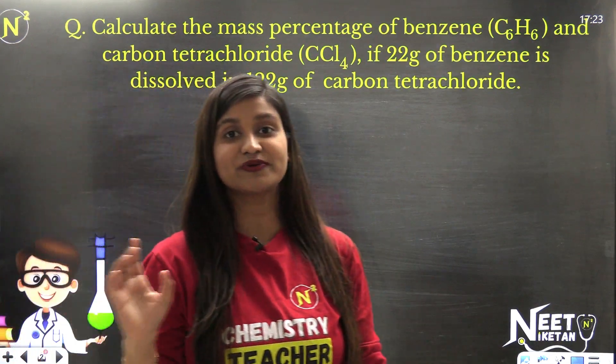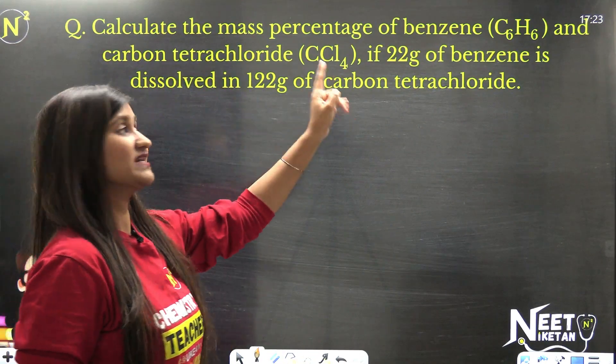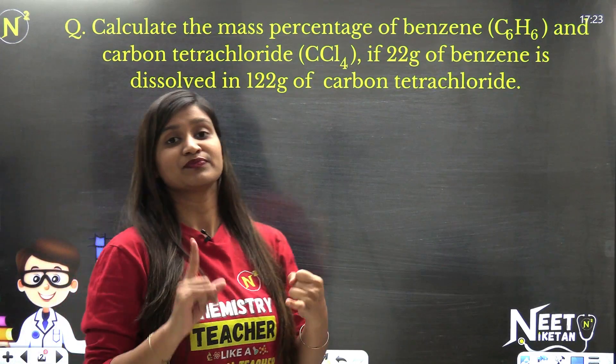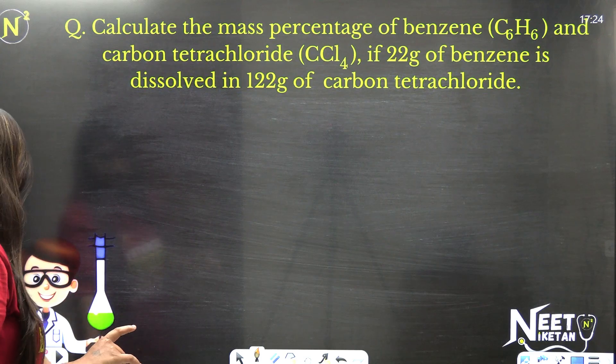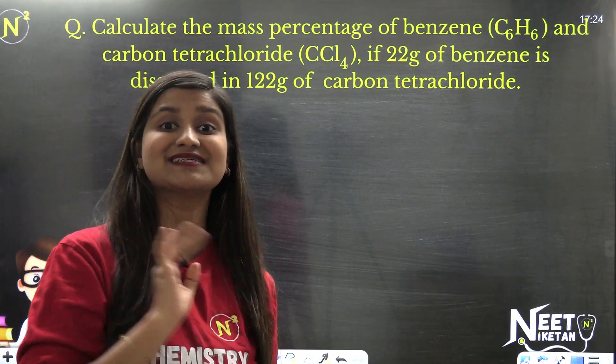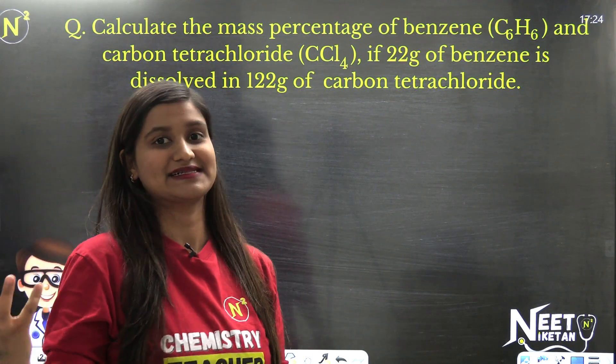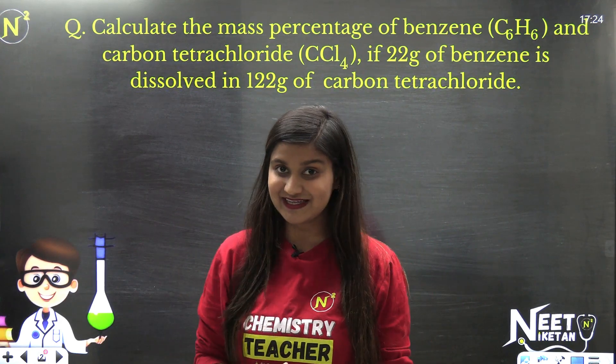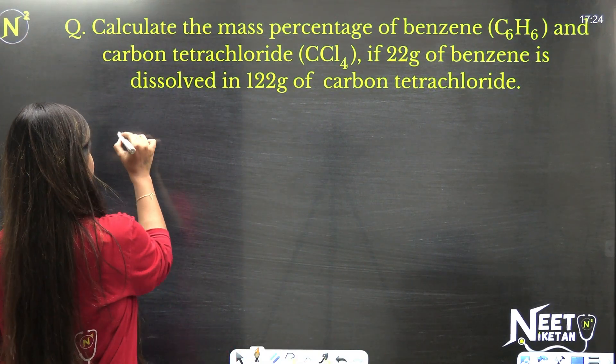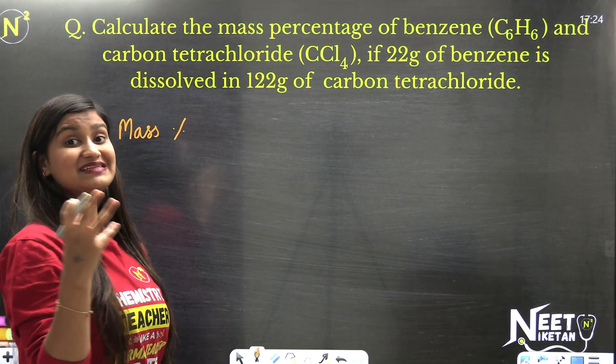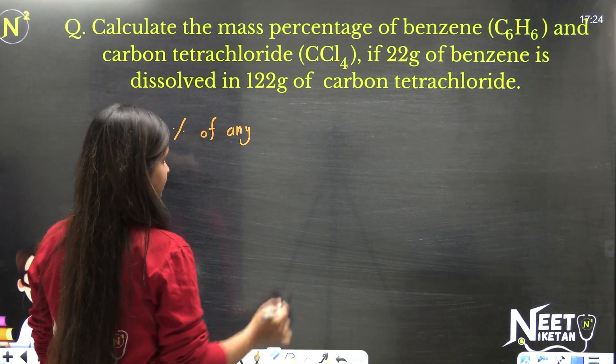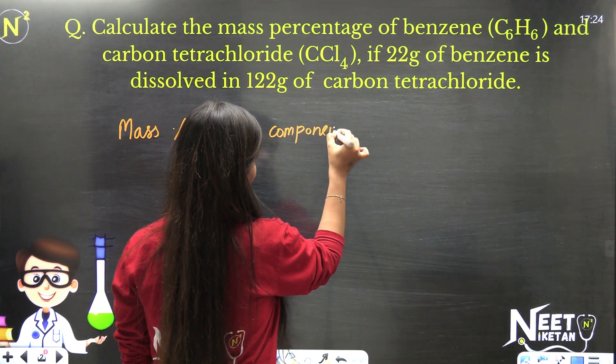Let's get started. Here we have question number one, which says calculate the mass percentage of benzene C6H6 and carbon tetrachloride CCl4 if 22 grams of benzene is dissolved in 122 grams of carbon tetrachloride. Mass percentage, we saw it in the last session, that we can remove the mass percentage of a component.